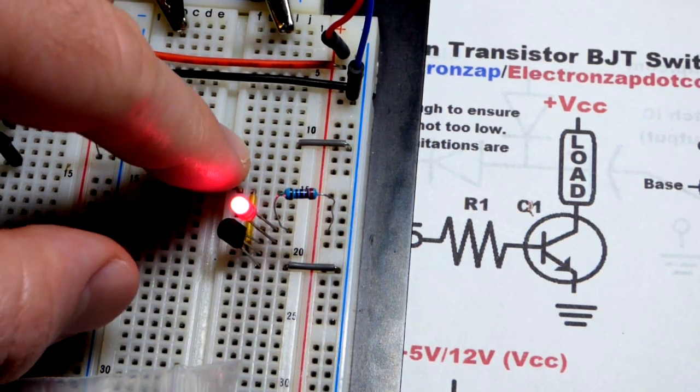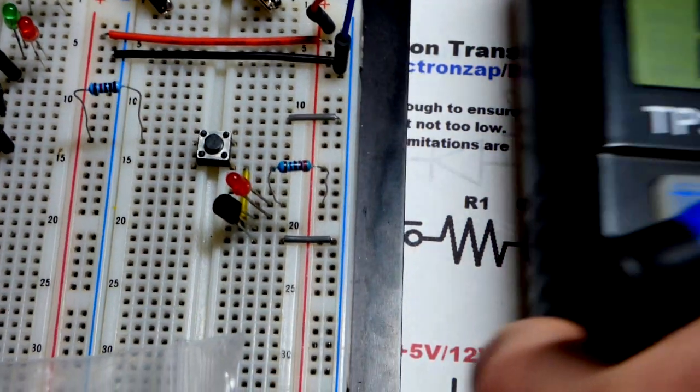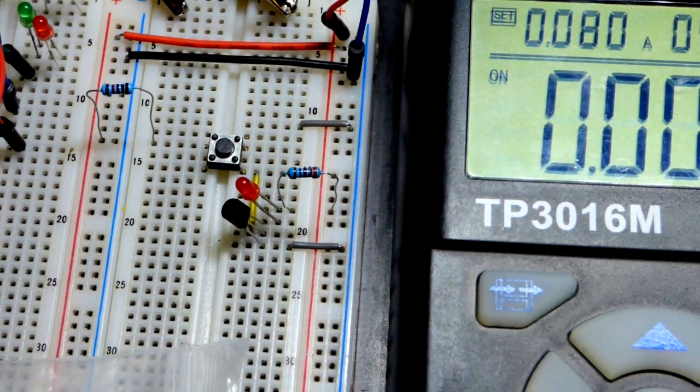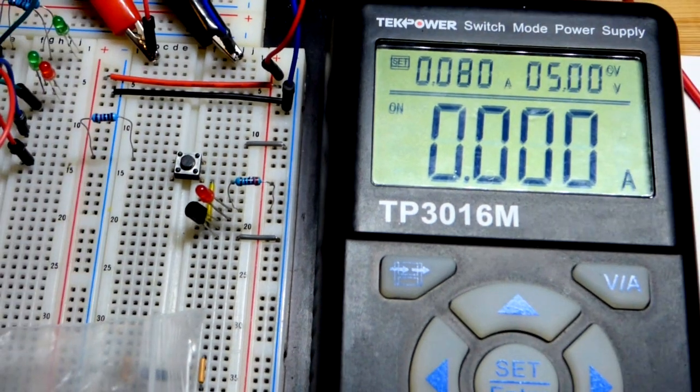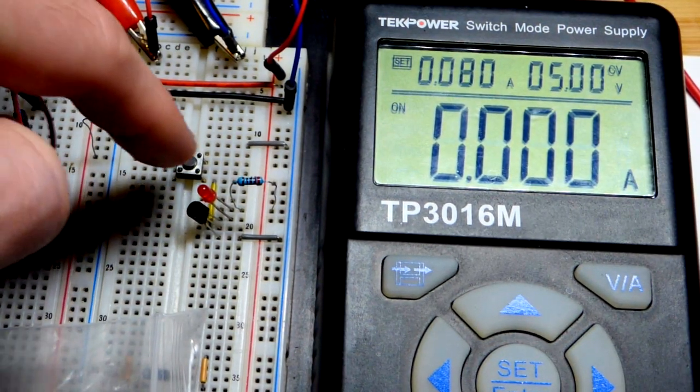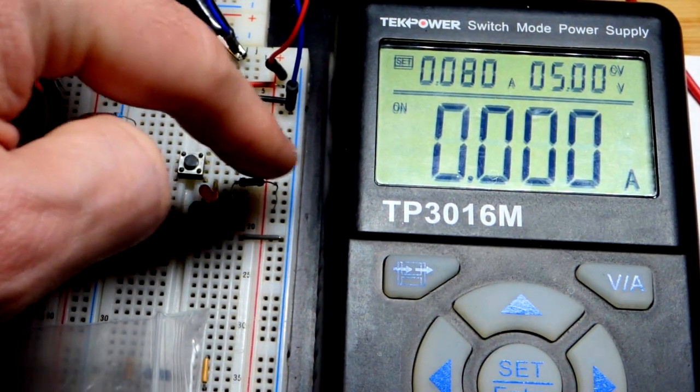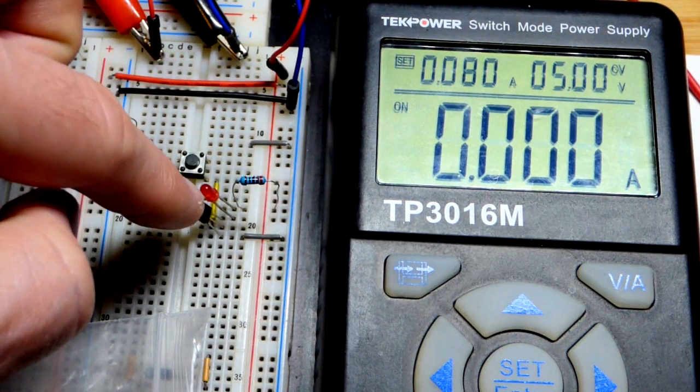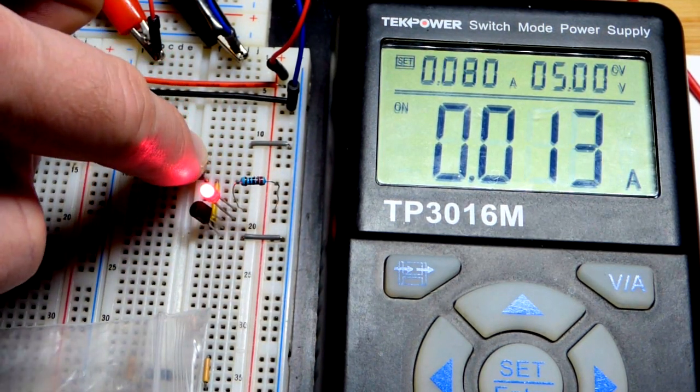It's as bright as it was before when we just had the 220 ohm resistor. So this very small amount of current is allowing tons more current. In fact, the transistor is not really limiting current at all.